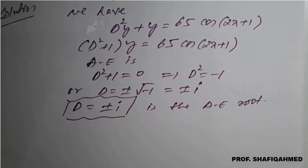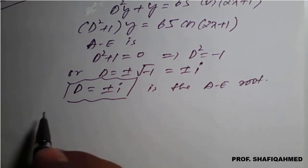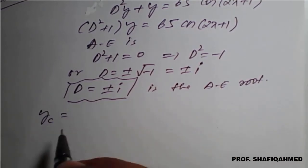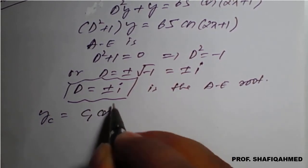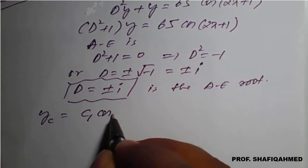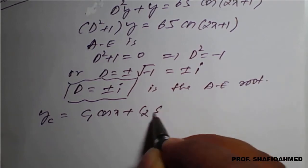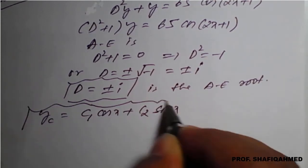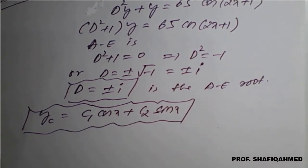With the help of this, we can write the complementary function as yc. The real part is missing, so yc = c1·cos(x) + c2·sin(x). This is the complementary function, the yc answer we got.